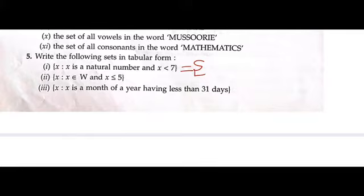So it is x, and what is x? x is a natural number less than 7. Natural numbers start from 1, 2, 3, 4, 5, 6. We cannot take 7 because it has to be less than 7. So that's it, close the curly bracket.